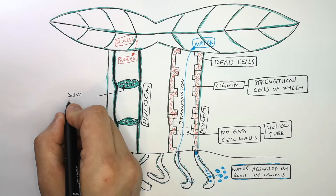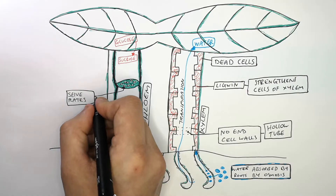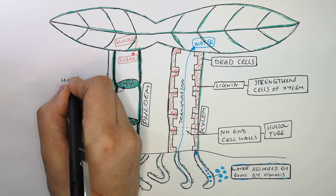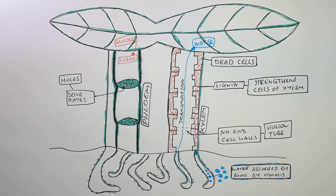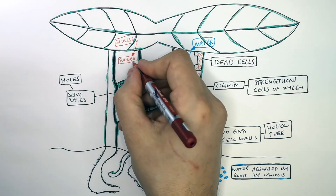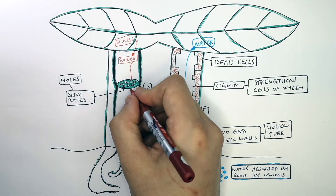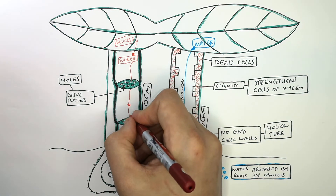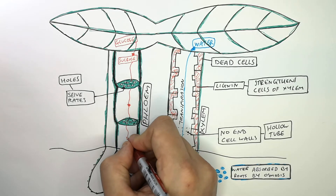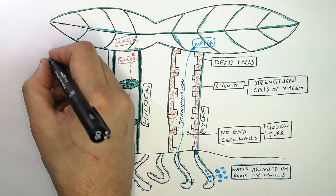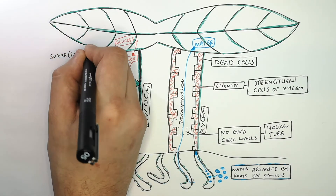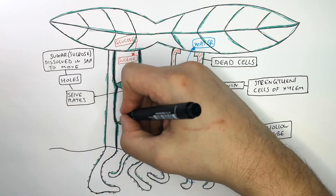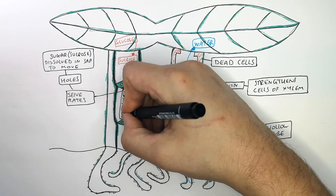The sieve plates separate the different compartments of the phloem. These sieve plates have holes in them known as pores. These pores allow sucrose to be transported through the phloem. The sucrose is being transported around the phloem through the pores. These pores allow the sugar, which is dissolved in sap, to move around the plant via the process of translocation.